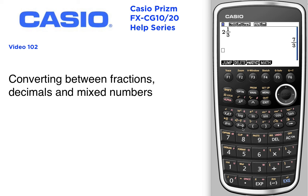If you want to convert that answer to the mixed number again, press Shift then the FD key above the number eight and that will change it back. Press again for decimal, press again for mixed number.